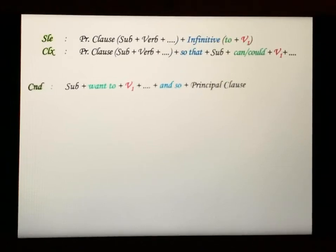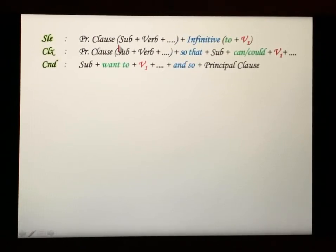The second rule is about infinitive structures. For simple sentences, we have principal clause plus infinitive 'to' plus verb. For complex sentences, we use 'so that' followed by subject plus 'can' or 'could' - use 'can' for present tense and 'could' for past tense, then verb. For compound sentences, we use 'want to' plus verb, then 'and so' plus the principal clause.